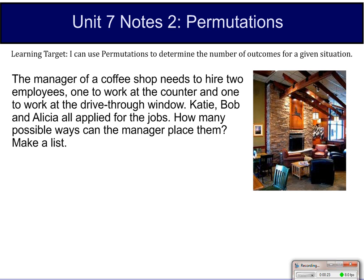Take a look at the problem here. Manager of a coffee shop needs to hire two employees, one to work the counter and one to work the drive-thru. Katie, Bob, and Alicia all applied for the jobs. How many possible ways can the manager place them? Make a list.